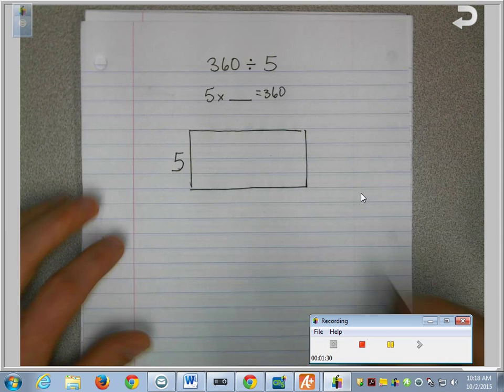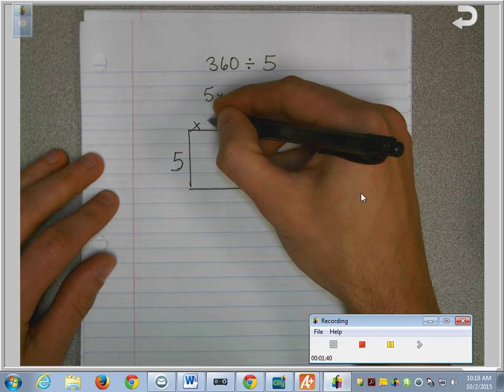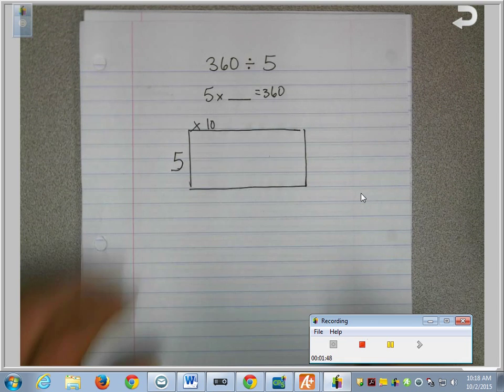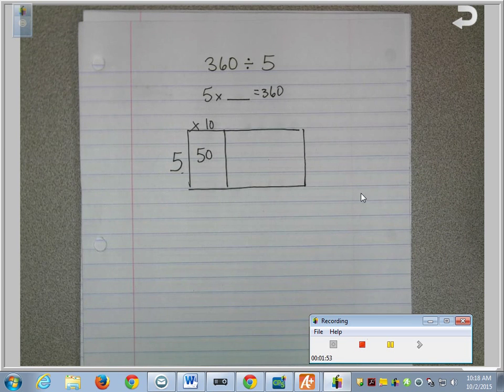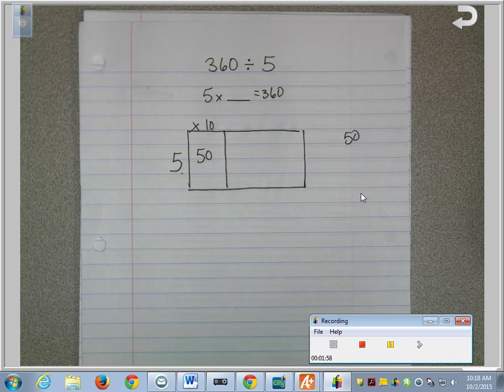The first thing I'm going to do is figure out what should I multiply 5 times that's going to help get me close to 360. A lot of people think it's easy to multiply by tens. So someone might think, maybe my first step should be multiply 5 times 10. We can do that problem in our head, because 5 times 10 is 50. So that's taken up a portion of our 360. And I'm just going to keep track of how many we've done here on the side. So far, we're up to 50. That means I've got 310 more to go.